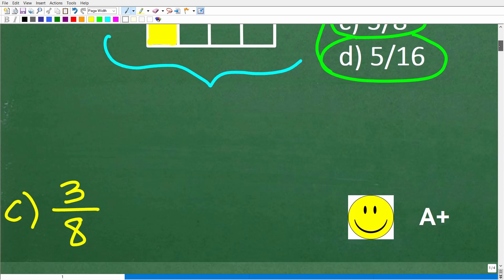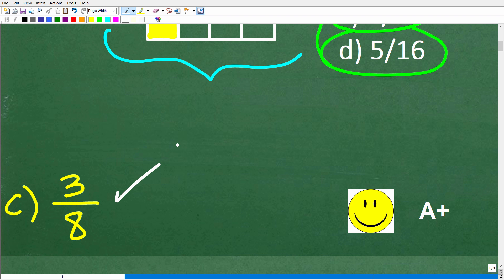Let's take a look at the answer. The correct answer here is C, which is 3 eighths. Now if you got this right, well you definitely get a happy face and an A+. And if you're like, I'm a little bit lost, what's going on here? Well, this is not that difficult. Let's go ahead and get into it right now.